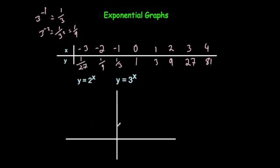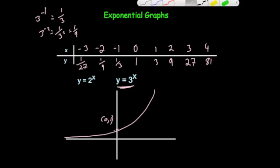This graph would go through (0, 1) as well. But notice: at x=1 it's 3, at x=2 it's 9 — whereas for y = 2^x it was 2 and 4. So this one gets bigger quicker, making it steeper, and it goes down quicker towards 0 on the left. If drawn on the same axis, y = 2^x wouldn't be as steep, and it would approach 0 a bit slower. The larger the base number, the steeper the graph.